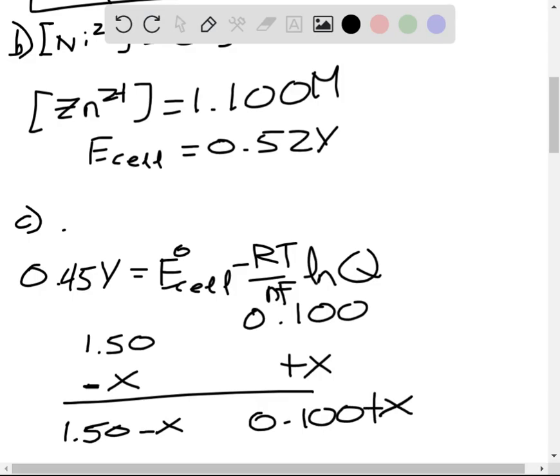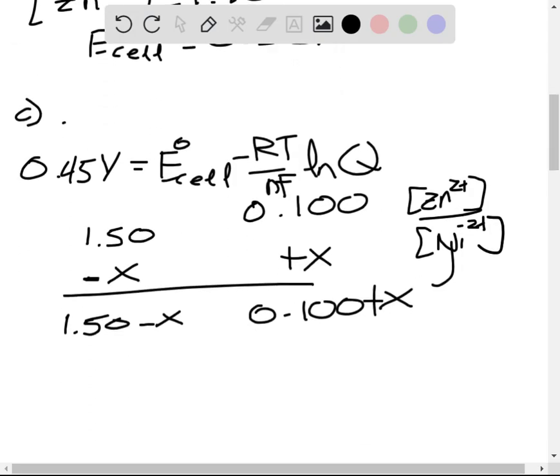And now we can write this essentially as our reaction quotient, which is the concentration of zinc divided by the concentration of nickel. And now, based on this information, we can use this to determine the value of X in our final amounts.